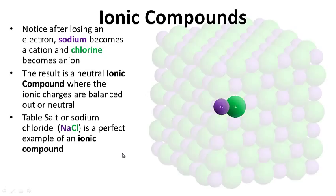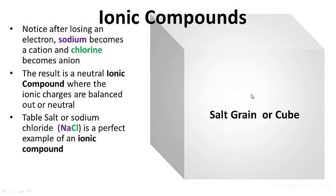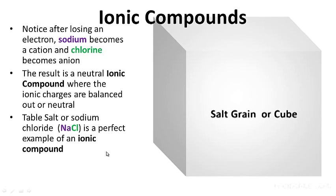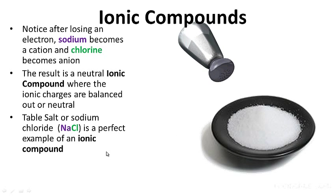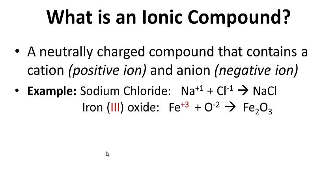This could be a salt grain or cube made up of sodium and chlorine atoms — an ionic compound. Ionic compounds form between positive cations and negative anions. For your notes, write: what is an ionic compound? Question on the left-hand side, answer on the right-hand side. Please write the examples down. Go ahead and pause this while you write.